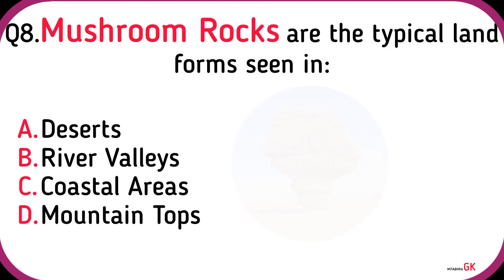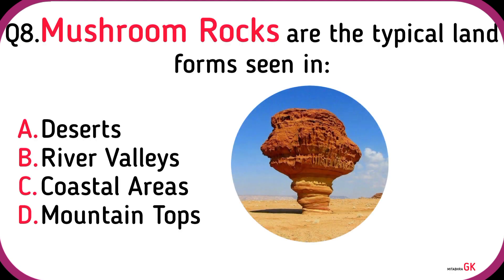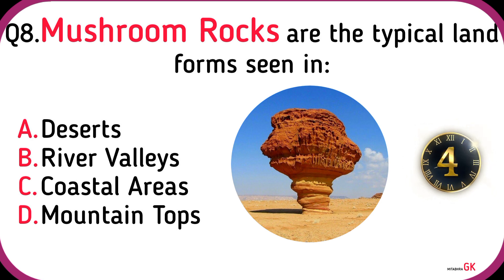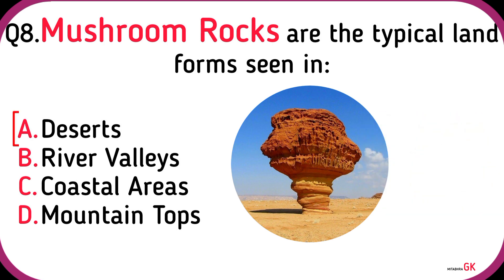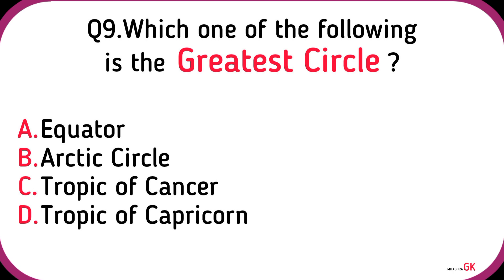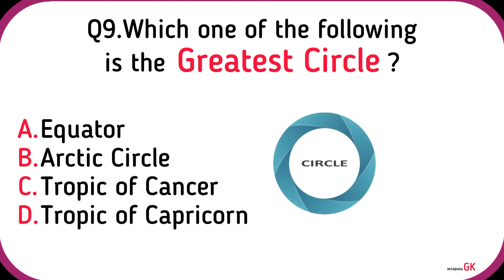Glacier. Mushroom rocks are the typical landforms seen in? Deserts. Which one of the following is the greatest circle?